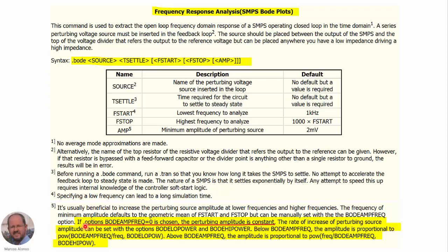In this case we are going to keep the perturbing amplitude constant, so it's very important to set the option bode_amp_freq equal to zero, so the perturbing amplitude is going to be constant. If we have some issue obtaining the bode response, then we can investigate other possibilities to change the amplitude during the simulation. But today we are going to focus on a constant amplitude during the complete simulation.